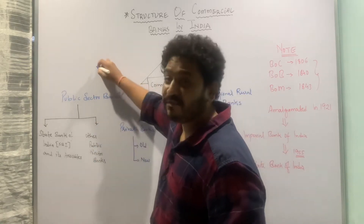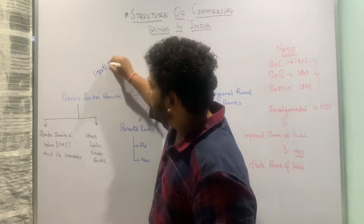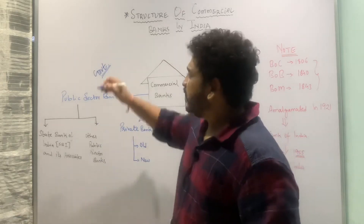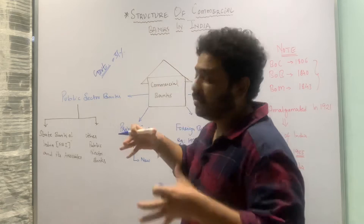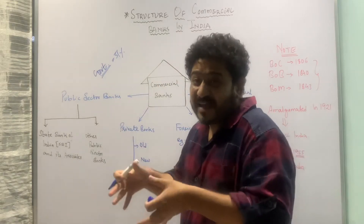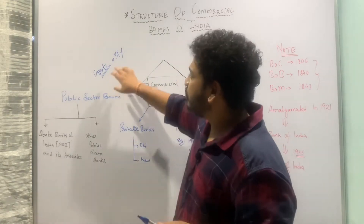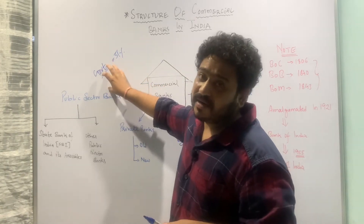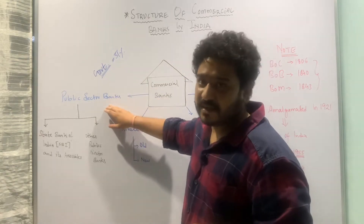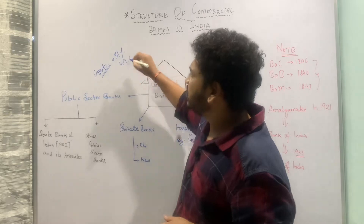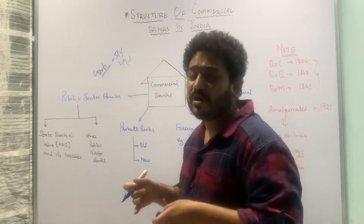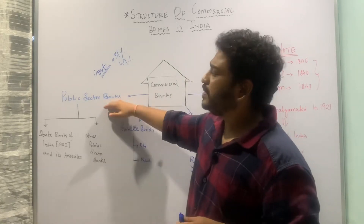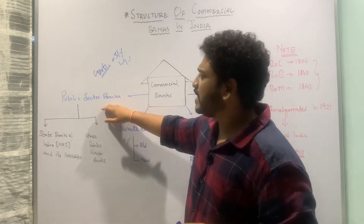Public sector banks are those banks in which the majority of the stakeholders is the government. For any entity to be the majority stakeholder, it has to hold a minimum of 51 percent of the shares or stakes in that particular financial institution. Whenever the government holds 51 percent of the stakes, you can call such a bank a public sector bank. The remaining 49 percent can be held by individuals or a combination of others.